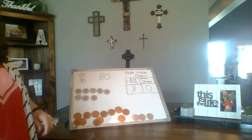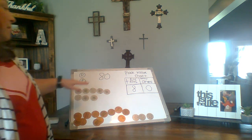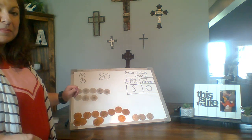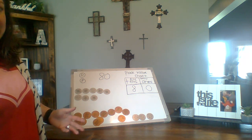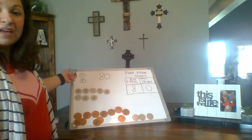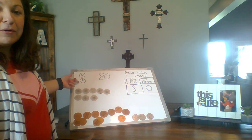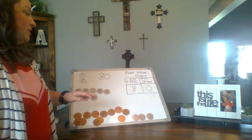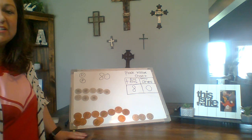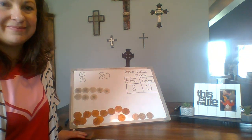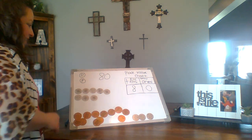We're going to be working today with representing the numbers that I give you with dimes and pennies. Remember, if you don't have any dimes and pennies at your house, you can just draw a circle with a D for dime or a P for penny in your journal. And then I want you to make yourself some place value charts in your journal for these numbers that I give you. Great job — let's do a couple more like that.